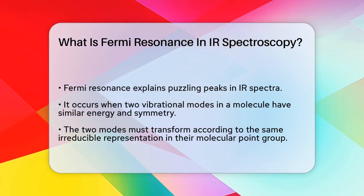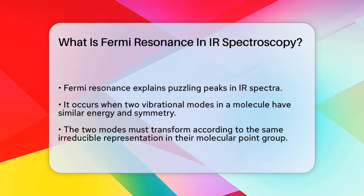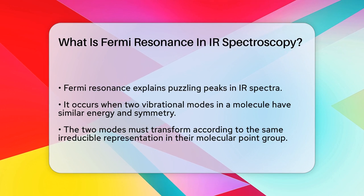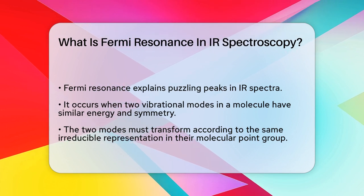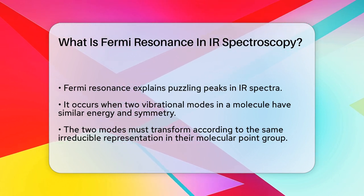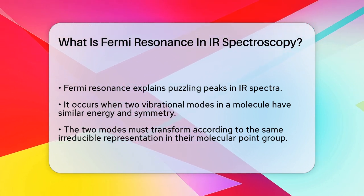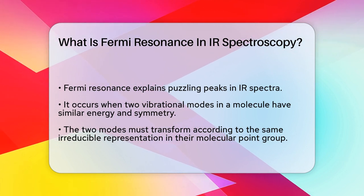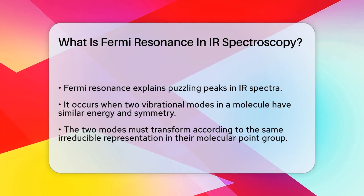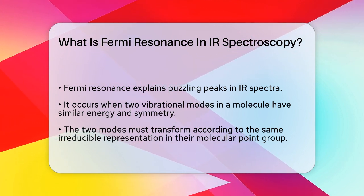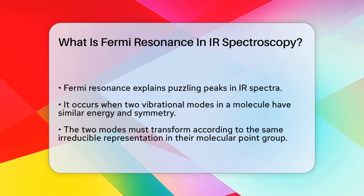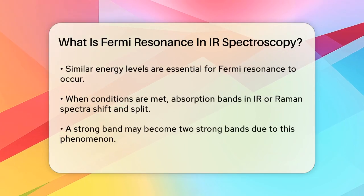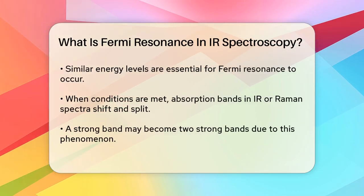To understand this better, let's look at the requirements for Fermi resonance to happen. First, the two vibrational modes must transform according to the same irreducible representation in their molecular point group — in simpler terms, they need to have the same symmetry. Second, these modes must have very similar energies.